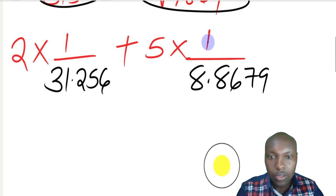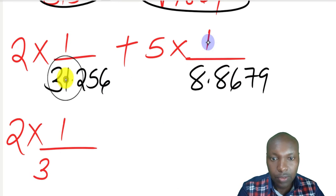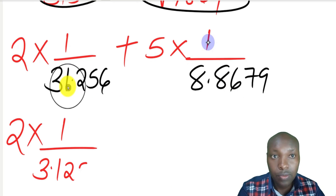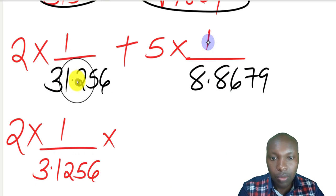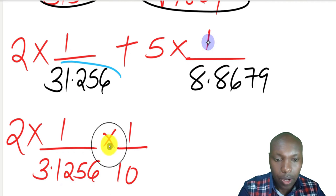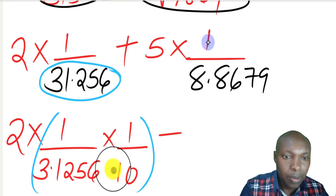The third step now is to obtain the reciprocal of this fraction and also this one. We shall begin by writing 31.256 in standard form, since we cannot get this number directly from the tables of reciprocals. Writing this number in standard form so that it lies between 1 to 9.99, we get 1 divided by 3.1256 multiplied by 1 over 10.